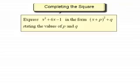Now when we're given a quadratic expression, in this case x squared plus 6x minus 1, and we're asked to write it in this format, it is called completing the square. So let me take you through this and show you how it's done.